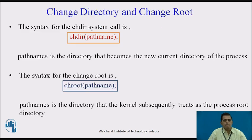File system is a major part in the Unix operating system, where the file system maintains file creation, managing all the files, and performing all the commands related to the file system. The file system is maintained by the kernel in the form of a hierarchical structure, and the user can perform any file operation following the different file system commands.